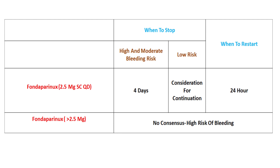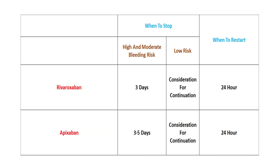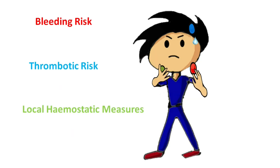Fondaparinux can be restarted 24 hours after surgery. For dabigatran, management depends on renal function. In patients with normal renal function, dabigatran can be stopped 4–5 days prior to high risk surgeries; 6 days for patients with impaired renal function. It can be restarted after 24 hours. Rivaroxaban should be stopped 3 days before high risk surgeries, and apixaban needs to be stopped 3–5 days before surgery. Both can be restarted after 24 hours.